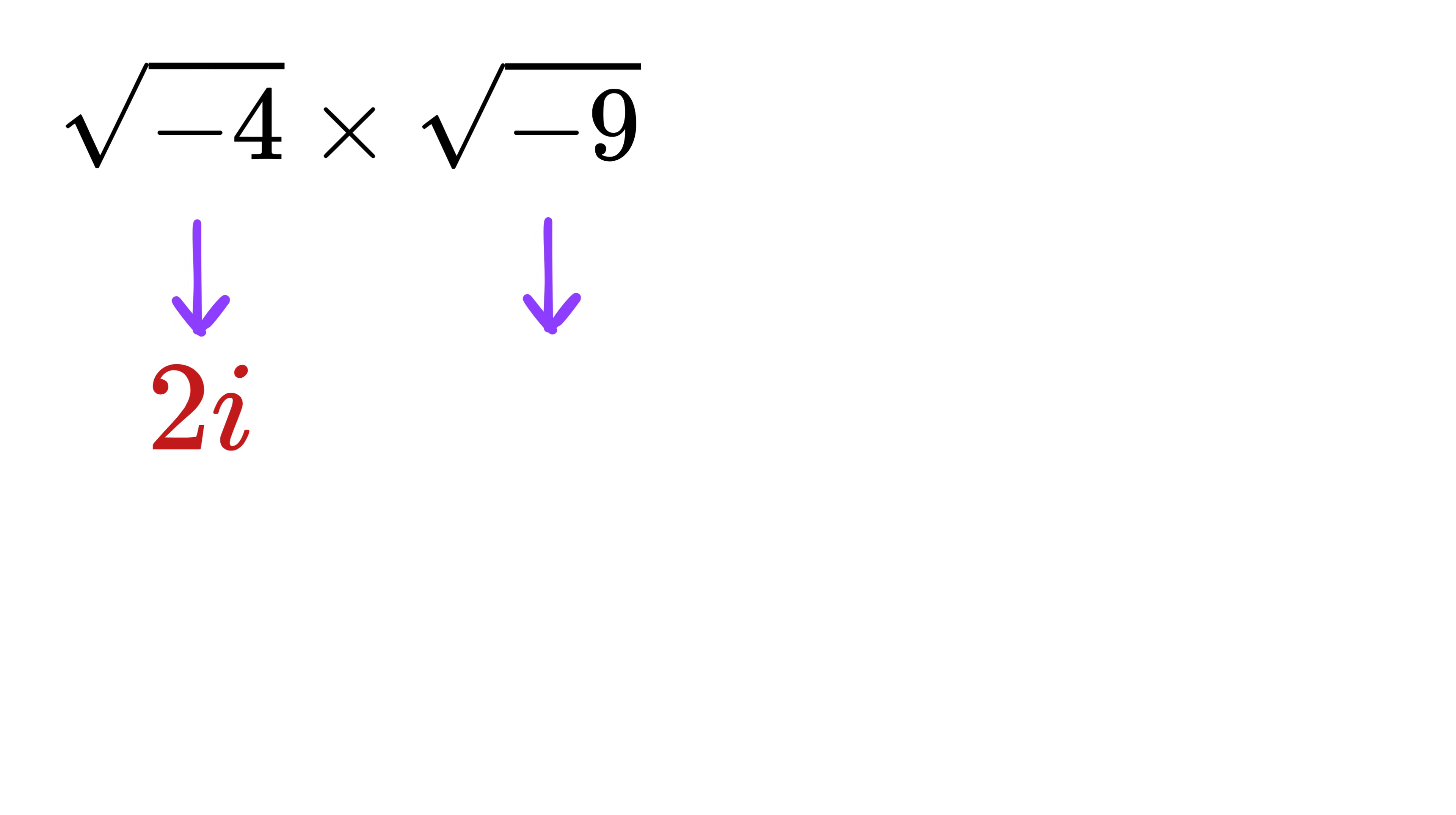We do the same thing for minus 9. Rewrite minus 9 as 9 times minus 1. The square root of 9 is 3, and the square root of minus 1 is i. So the square root of minus 9 becomes 3i.